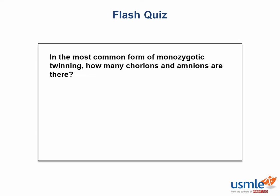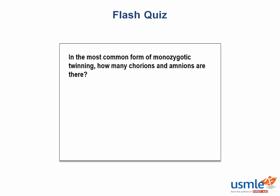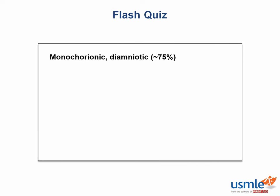Flash quiz time! In the most common form of monozygotic twinning, how many chorions and amnions are there? Monochorionic, diamniotic. Remember that this would be the C in the SCAB mnemonic for shared chorion.